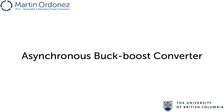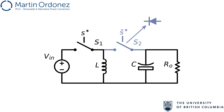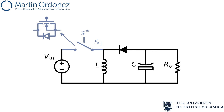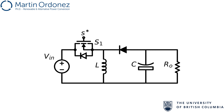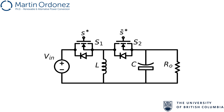In an asynchronous buck-boost converter, the switch S2 is implemented using a diode, which will automatically turn on when the switch S1, implemented with a controllable switch such as a MOSFET or IGBT, is turned off. In the synchronous buck-boost converter, the diode is replaced by another controllable switch driven by a complementary signal.